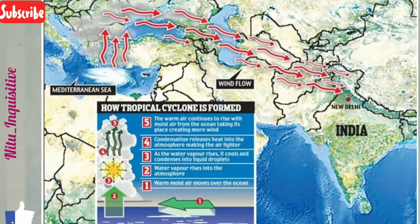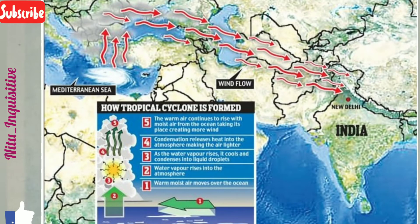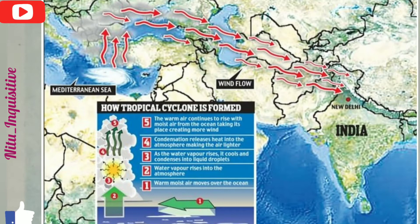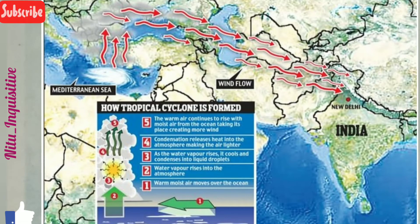Near the Mediterranean Sea, a low pressure system generates, and this weather phenomenon causes winds to travel from west to east. Many countries come in between before it reaches India — like Iran, Iraq, Afghanistan, and Pakistan. A question arises: why doesn't it cross all of India? Because we have one barrier — the Great Himalayas. Due to the Great Himalayas, the effect of the Western Disturbance is mostly seen in northeast India during the winter season.